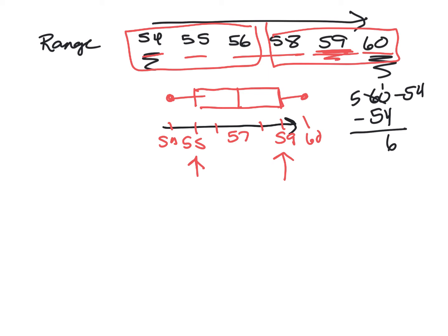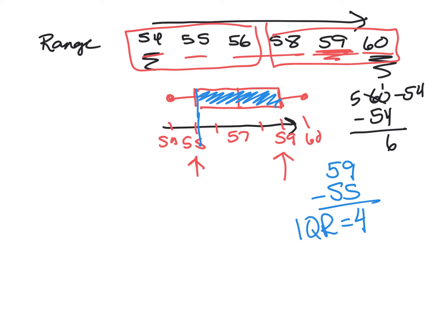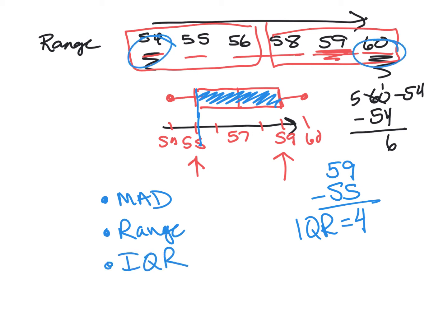The interquartile range is the range of the box. The regular range was the range of the whole data set — 60 minus 54. The interquartile range is the upper quartile of 59 minus the lower quartile of 55, which equals 4. So our three ways to measure variability are: MAD, the range of the whole data set, and the interquartile range — upper quartile minus lower quartile.